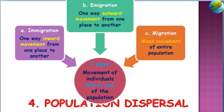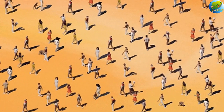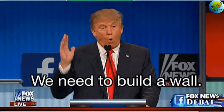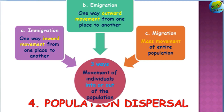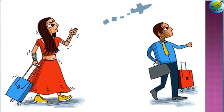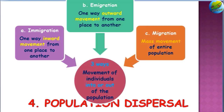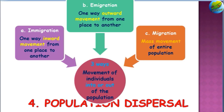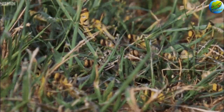The next important attribute of the population is population dispersal, which means the movement of individuals into or out of the population. It happens by three means: immigration, which is the inward movement — like people working in a country from different areas are immigrants, meaning inward movement of population from other places. Emigration is the outward movement from one place to another. Migration is the mass movement of the entire population. In recent days, you could have heard about the locust migration, which is the mass movement of the entire population.